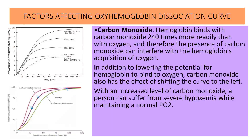Next is carbon monoxide. Carbon monoxide is very important because hemoglobin binds with carbon monoxide 240 times more readily than with oxygen. Therefore, the presence of carbon monoxide interferes with hemoglobin's acquisition of oxygen. In addition to lowering the potential for hemoglobin to bind oxygen, carbon monoxide also shifts the curve to the left. With increased levels of carbon monoxide, a person can suffer from severe hypoxemia while maintaining a normal partial pressure of oxygen.